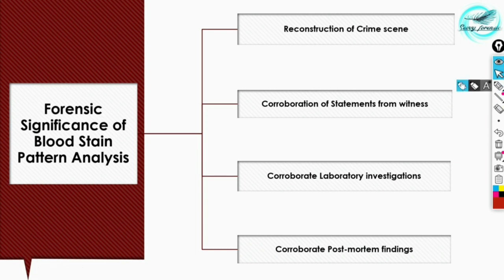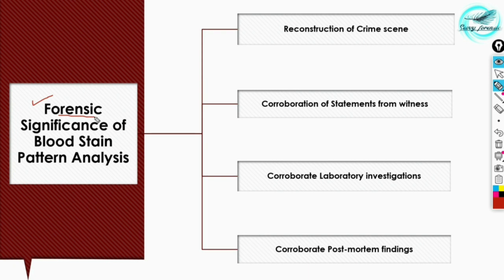In this part we'll be discussing the forensic significance of bloodstain pattern analysis. Up till now we have studied everything from the basics — the biological properties of bloodstains, their formation, their types, multiple methods of chemical enhancement used for making them visible, and how to analyze spatter stains at crime scenes.